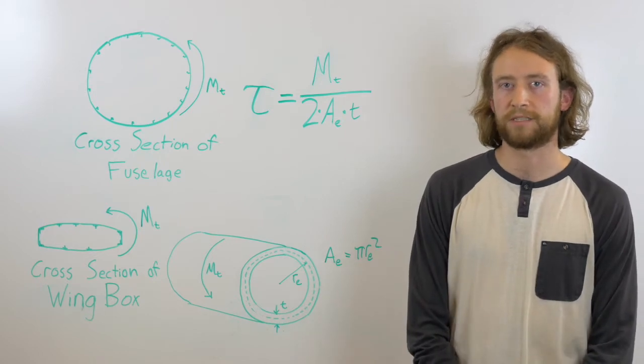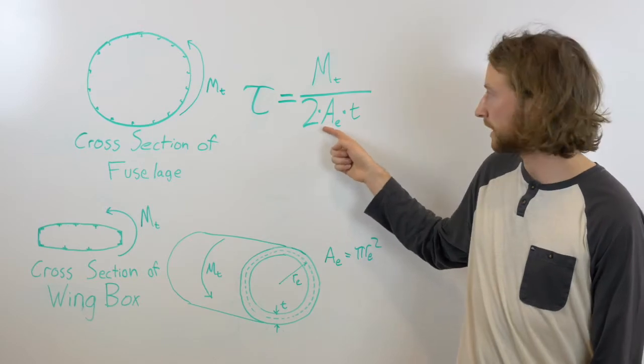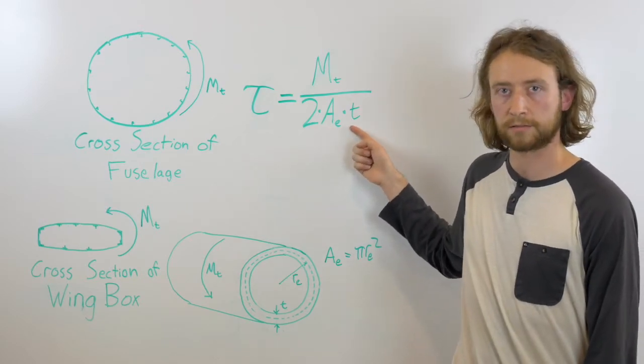The equation for torsional stress can be seen here. Tau equals the torsional moment over two times the area times the thickness of the beam.